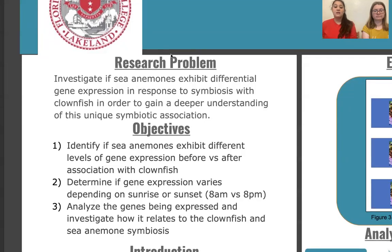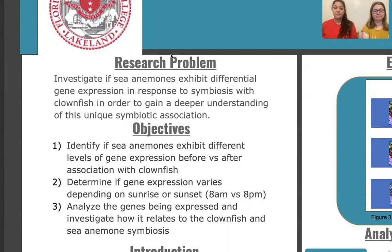We also wanted to see if that gene expression varies between 8am and 8pm. In our experiment, we mimicked the sea anemone's circadian rhythm — lights were set to turn on at 8am to mimic sunrise and turn off at 8pm to mimic sunset. Finally, if we did see genes being differentially expressed, we wanted to find out what those genes were, what they're doing, and how they're benefiting each organism in this association.